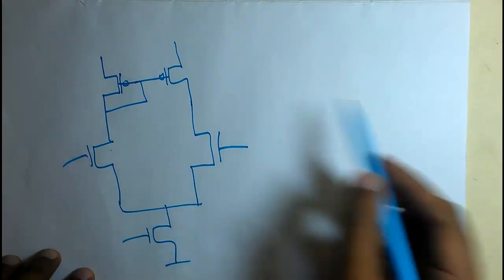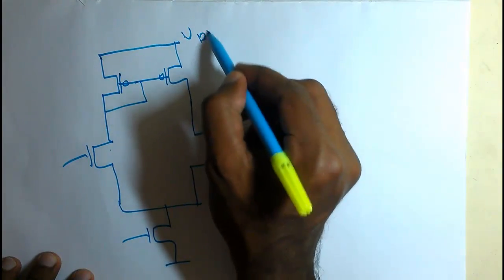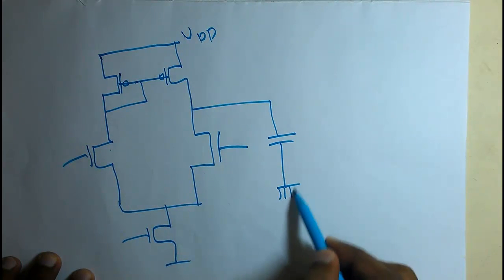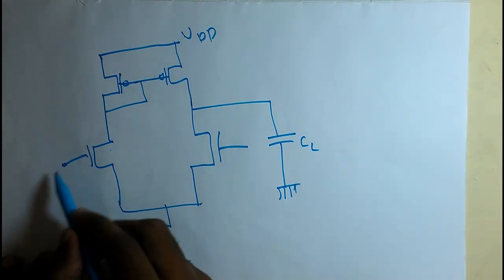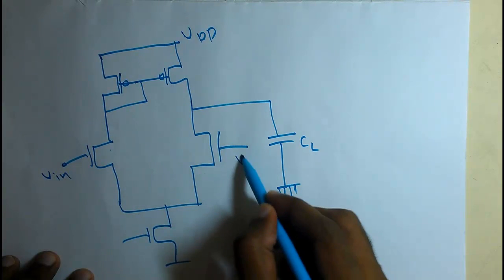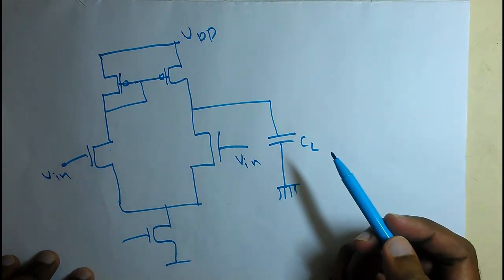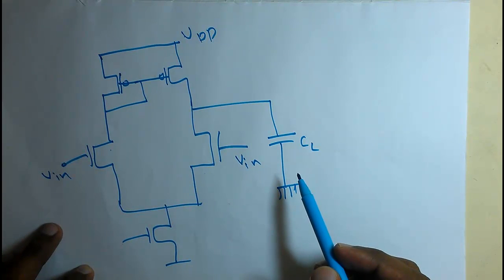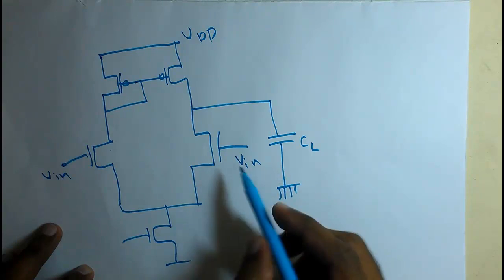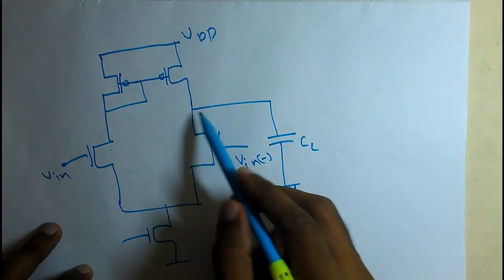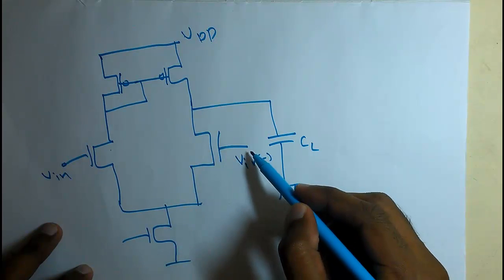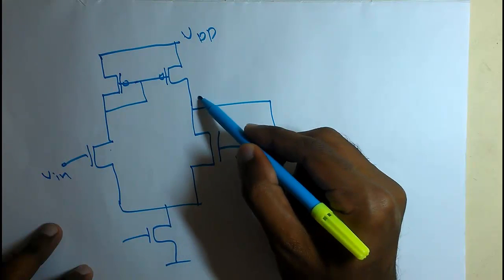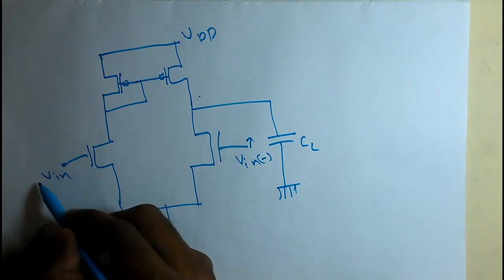This is the circuit diagram of a single-stage diff amp. This is the load capacitance here, and these two are the inputs. This would be the negative terminal, because if we increase the gate voltage of this common source amplifier, the drain voltage will decrease. So this is the negative sign, and this is the positive.